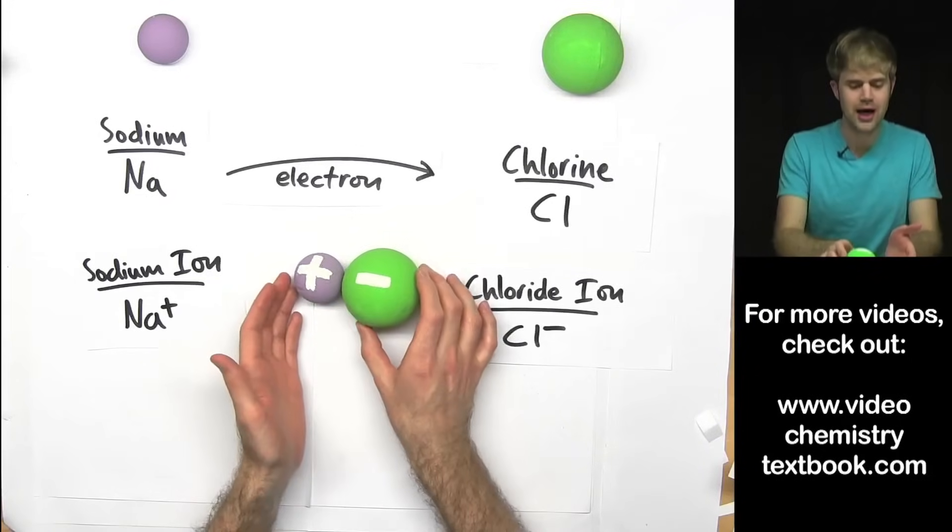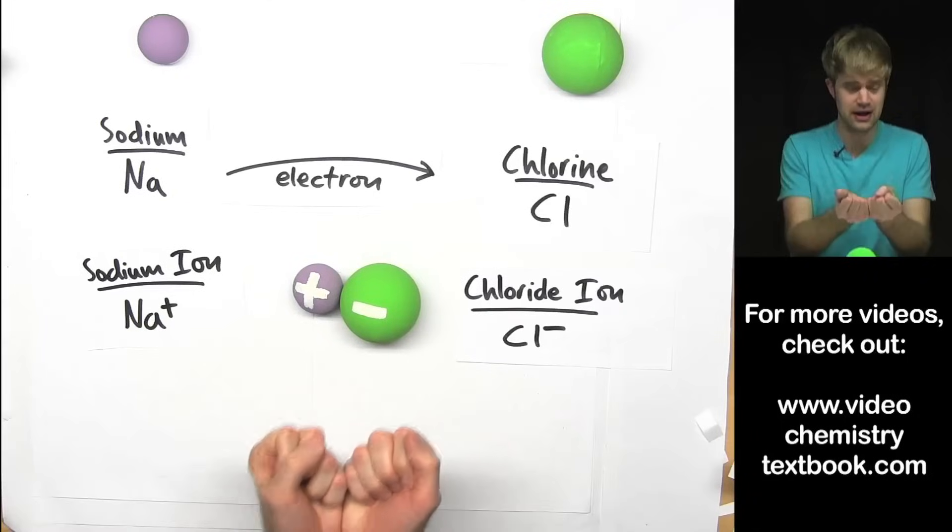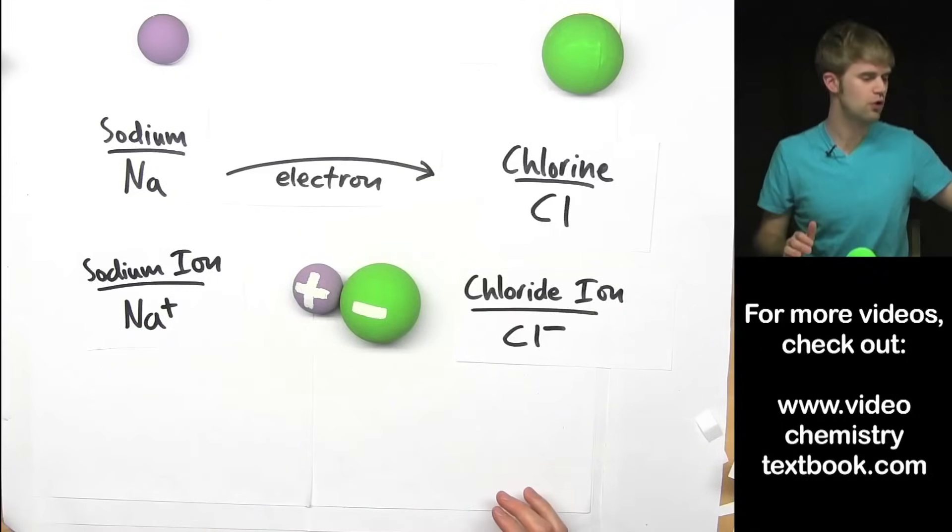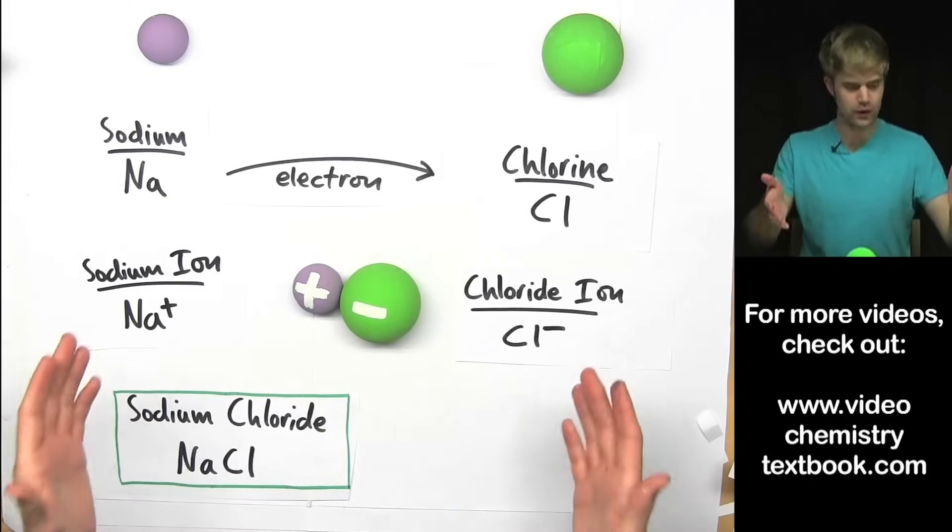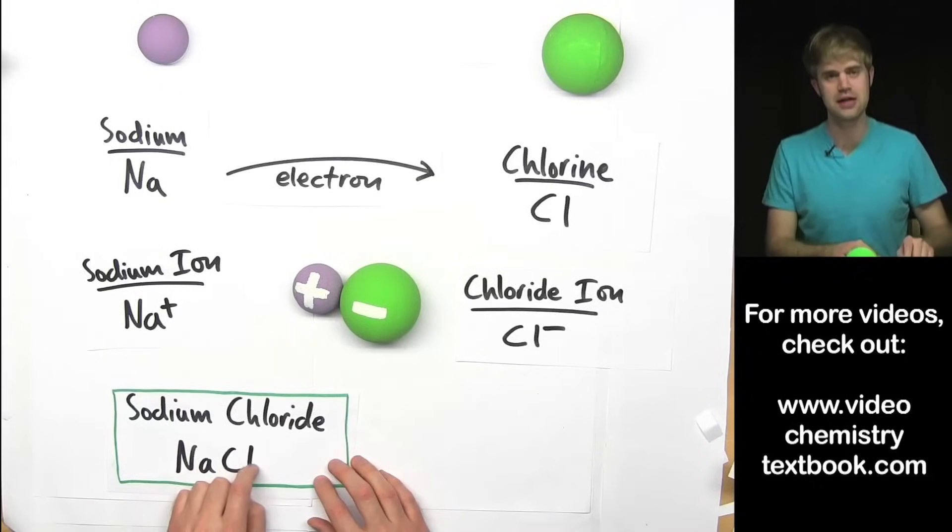So now they make a compound because these two things have connected. And the compound, we call that sodium chloride and we write its chemical formula as NaCl.